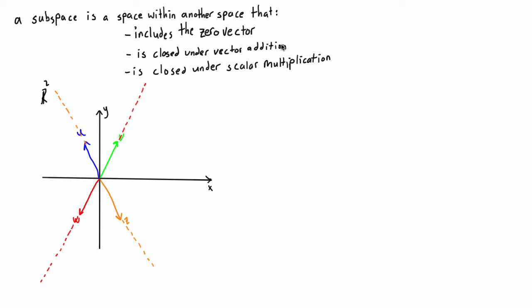When we say a subspace is closed under vector addition, it means that if you take any two vectors in your subspace and add them together, the resultant vector is still in your subspace. With parallel vectors, adding them gives another vector that is also parallel to the original two. The same applies for u and v — R2 itself is closed under vector addition. If we add the blue vector to the green one, we get a resultant vector that still lies in the plane of R2.